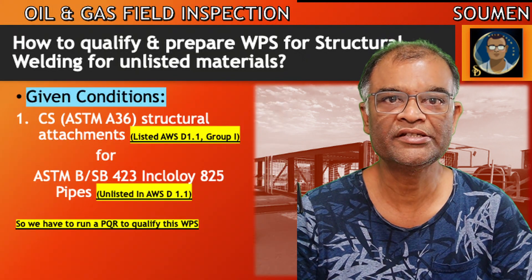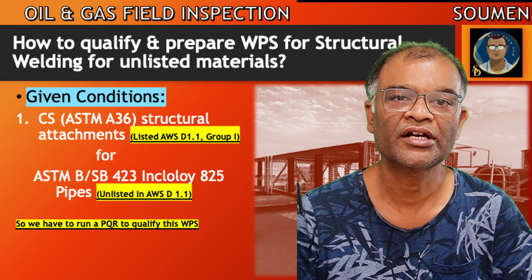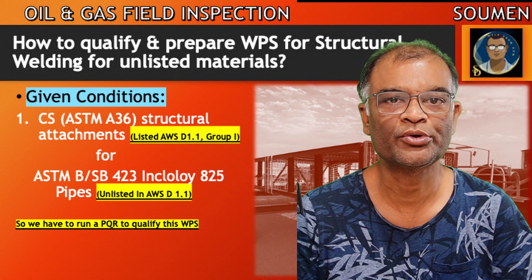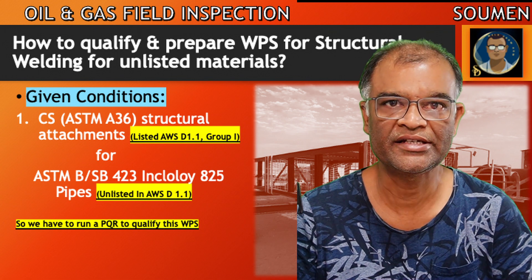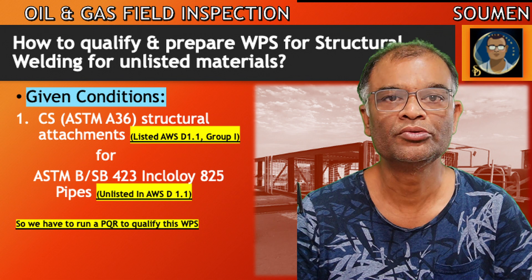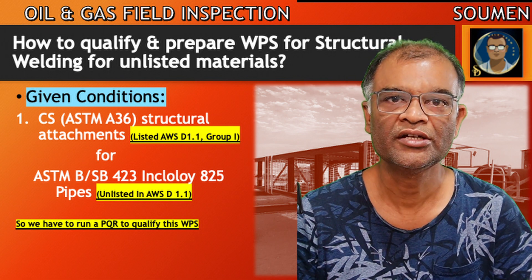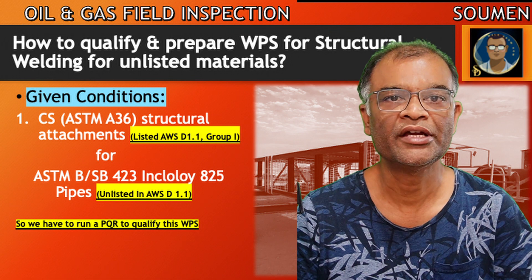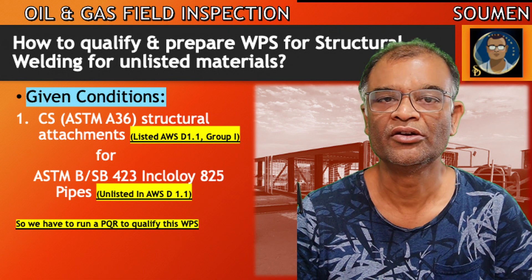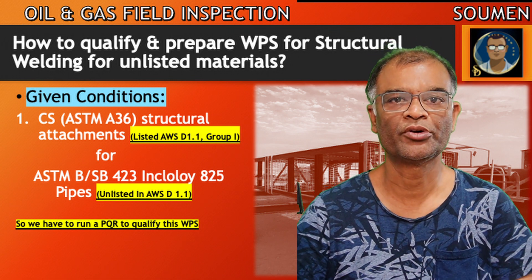The example here is we have Incoloy pipes that we need to weld. The carbon steel support material is ASTM A36 plate. We need to run a procedure qualification test because this Incoloy pipe is not listed in AWS D1.1.